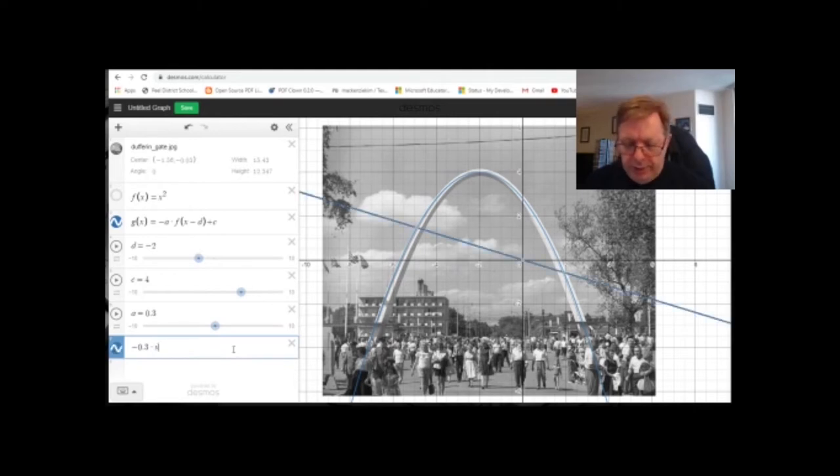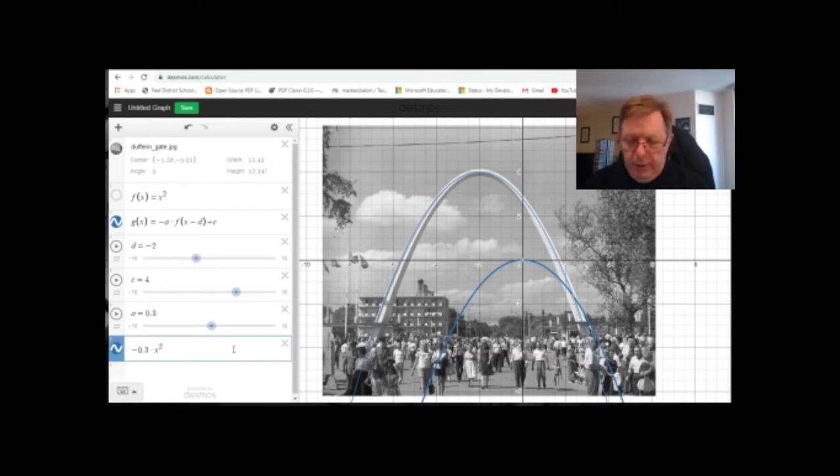It's like 0.3 times x squared. Well, that doesn't do much. Maybe we need to make x into x plus 2. Oh, that's good. And then if we add 4 to the whole function, we wind up with that again.